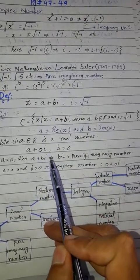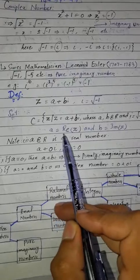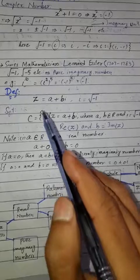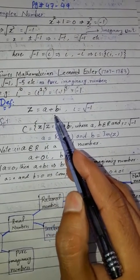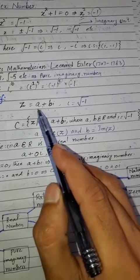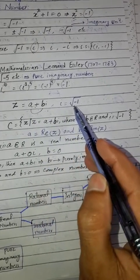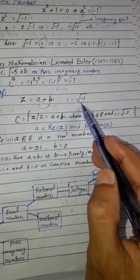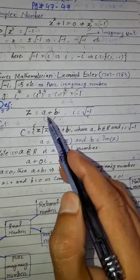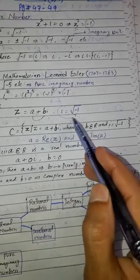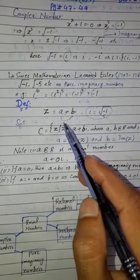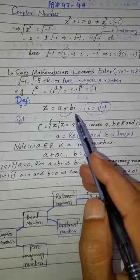Now the definition of a complex number: a complex number is a number in the form A plus B iota, where A and B are real numbers and iota equals the square root of minus 1. Any number in this form is called a complex number.